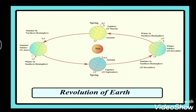Seasons are caused by the revolution of Earth around the Sun and also the tilt of Earth's axis. Here you can see the diagram — it starts from the 21st of March and continues. Earth is in different positions, and the first one, on 21st of March, is called the spring equinox or vernal equinox.